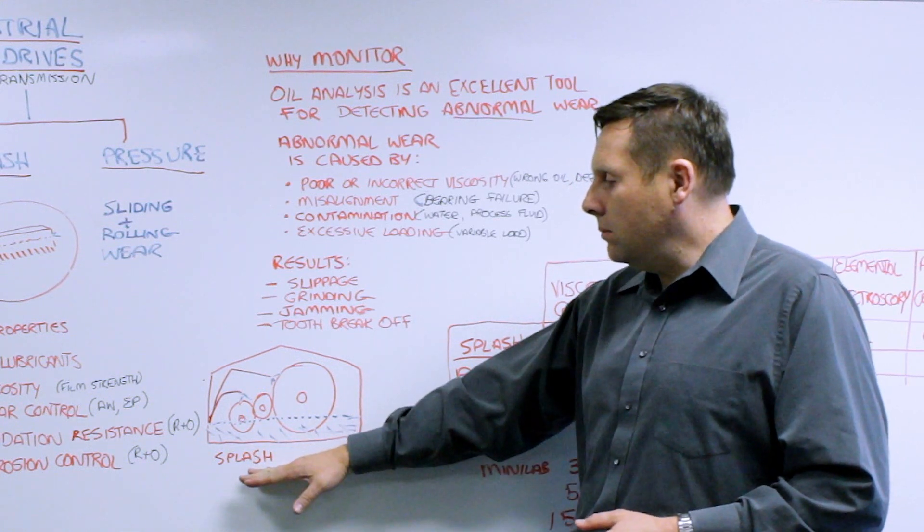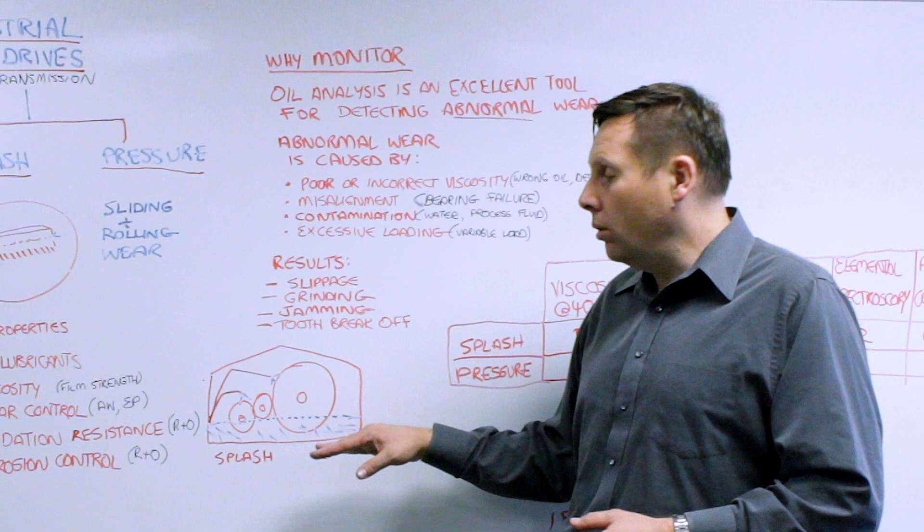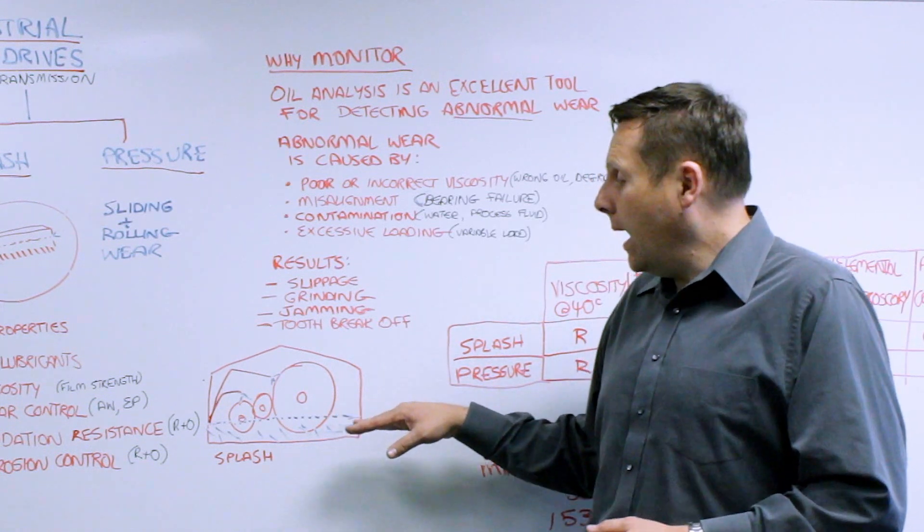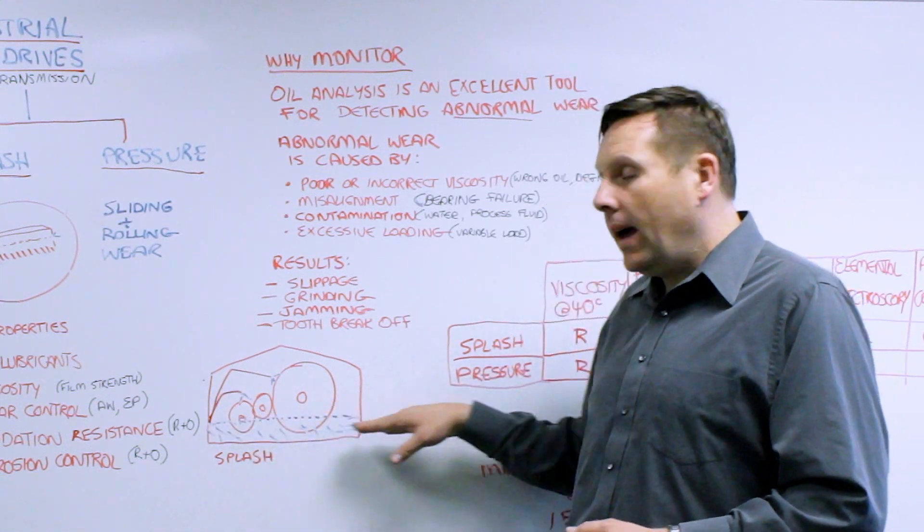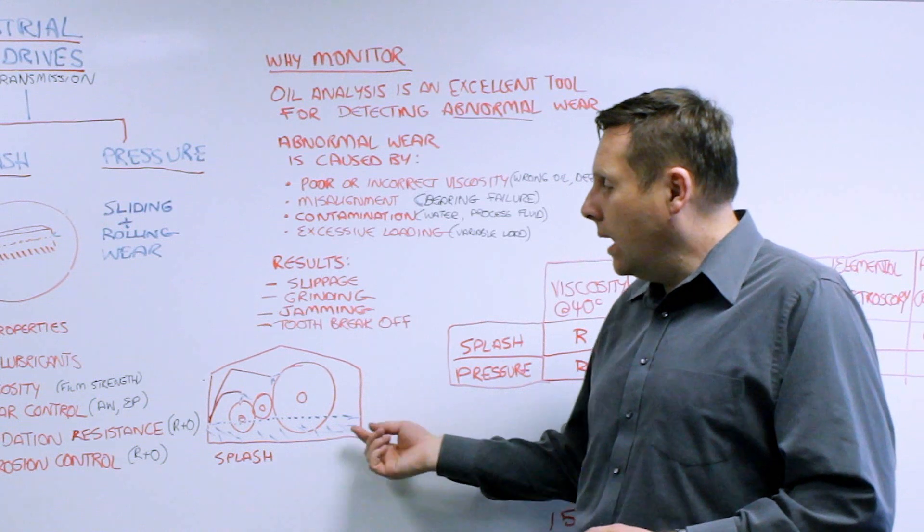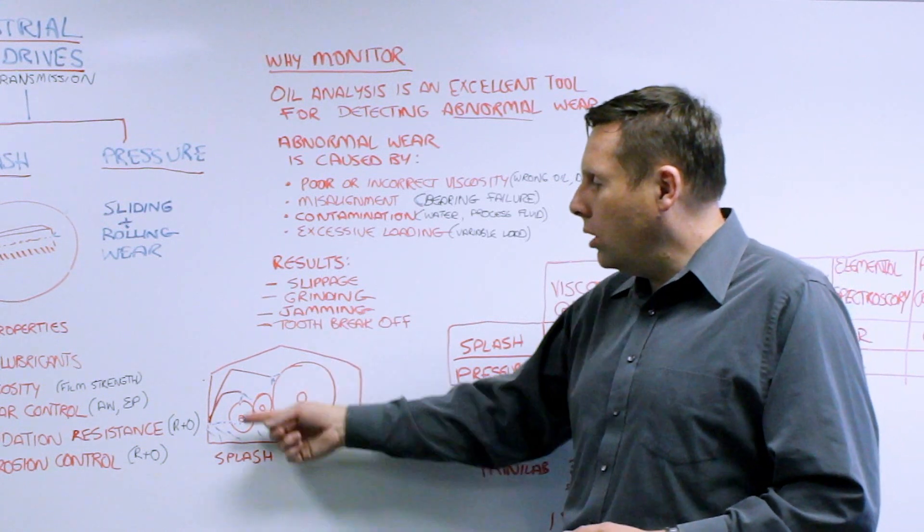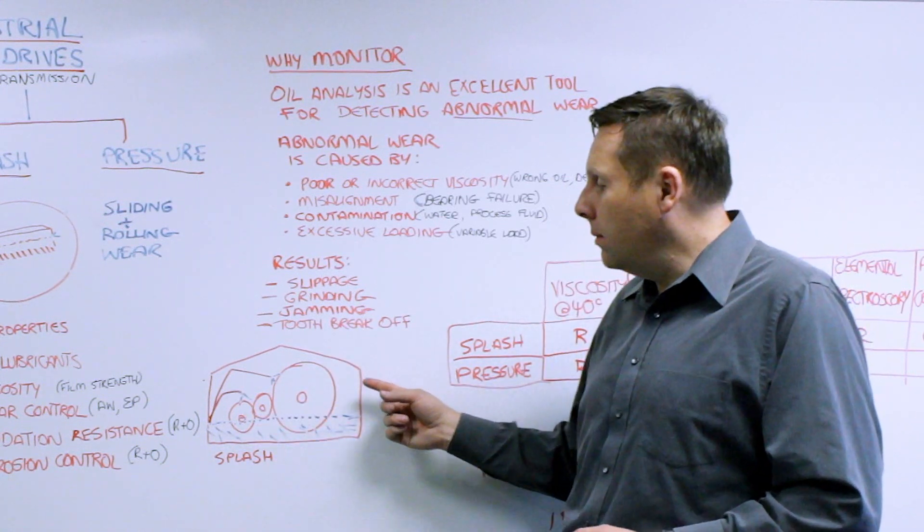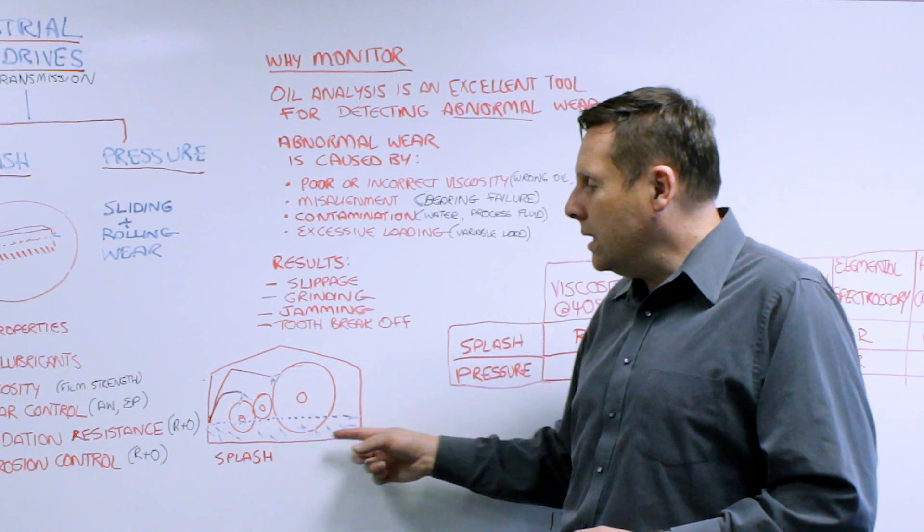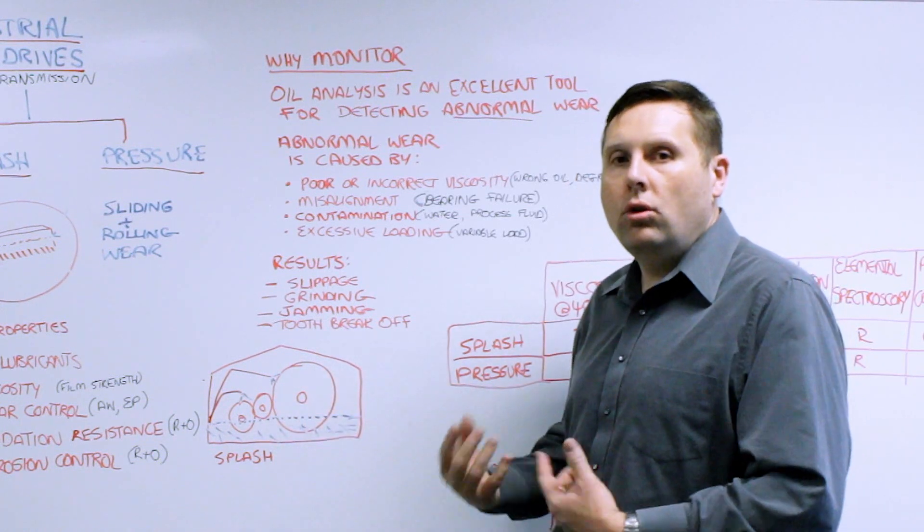The most common system, splash lubrication, is usually used for lower speed gearboxes and that's where the oil is in a bath lubrication system and the oil is drawn up by the gear systems and it is squeezed through the gear teeth during normal operation.